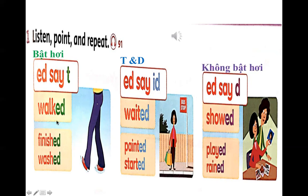Ở đây sẽ có một số ví dụ. Từ 'work' — work — đây là bật hơi. Các bạn để tay lên miệng thì các bạn thấy một luồng hơi ra. Thì chúng ta không đọc là 'work-id', chúng ta đọc là 'worked'. Worked. Worked.